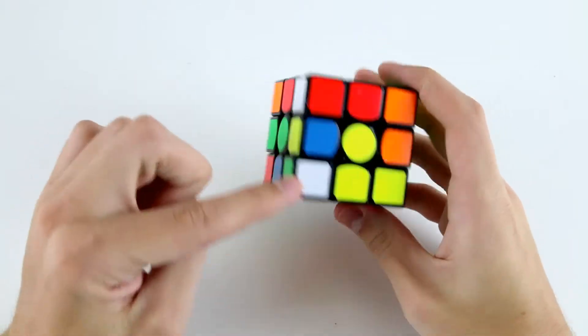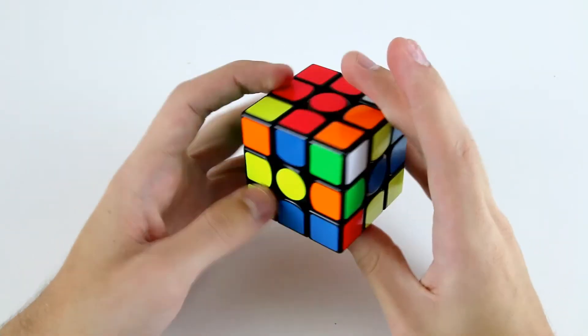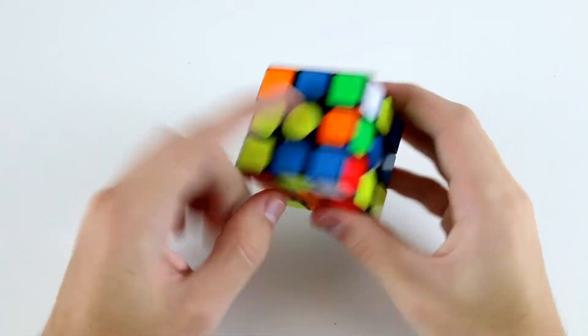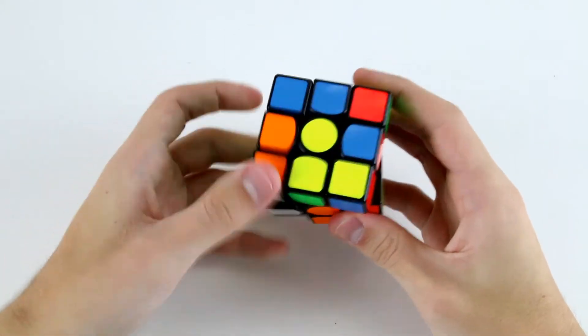So the first F2L pair that I see is this corner and this edge, so I can solve those. Then I've got these two here which I can insert into this slot like so.